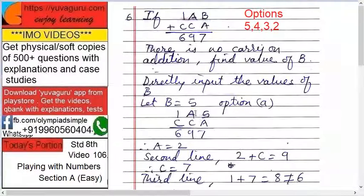Now A is 2, means what? A2 plus C. So 2 plus C equals to 9, so C becomes 7. So in the third line what happens? 1 plus 7 equals to 8, but this is 6. So this is not the correct option. B cannot be 5 then.